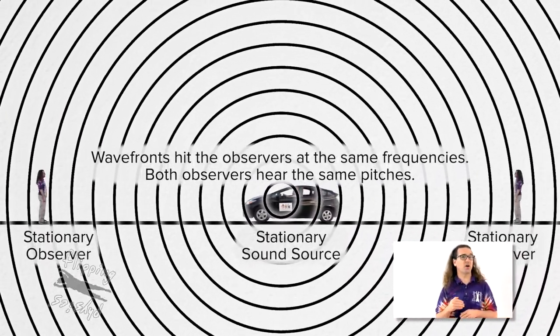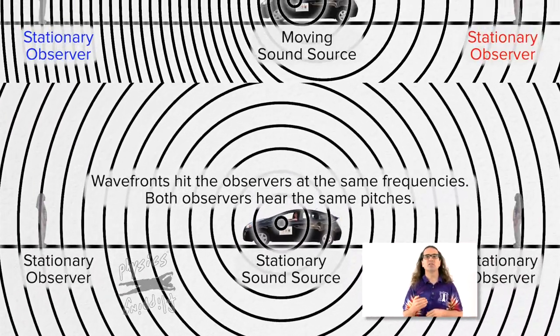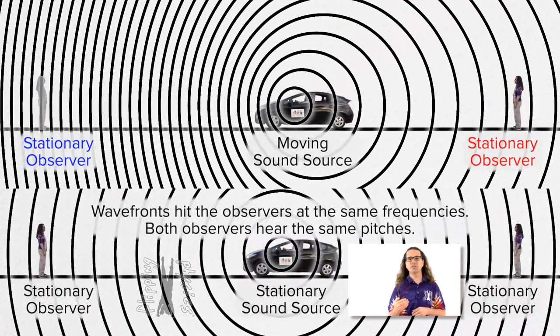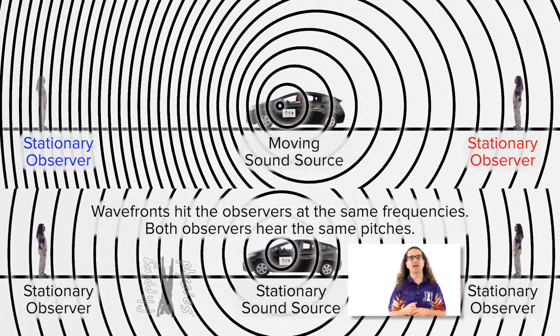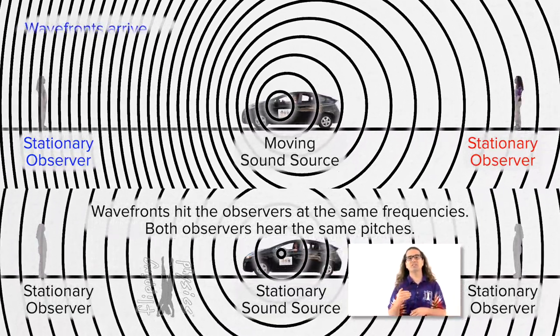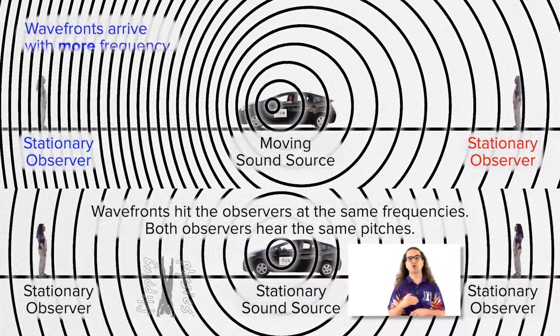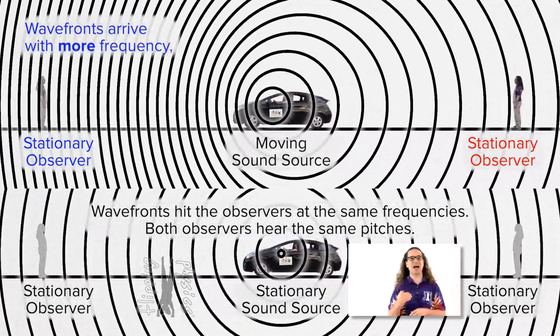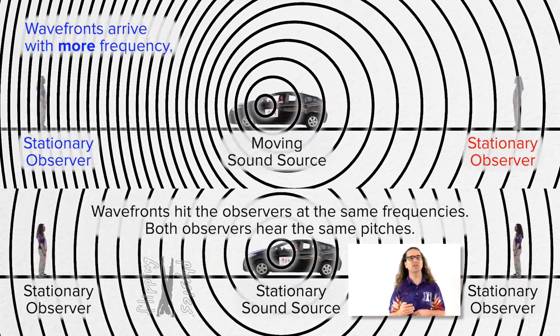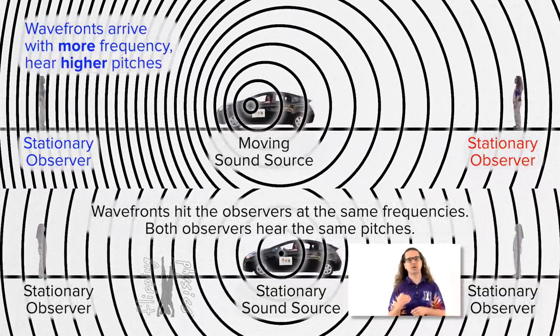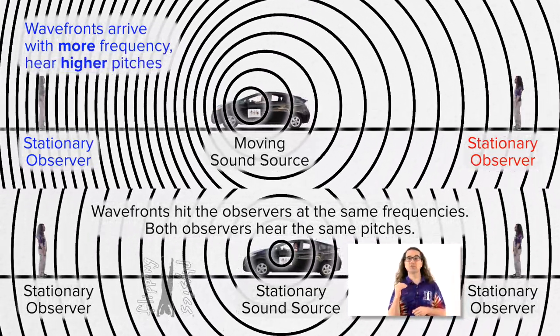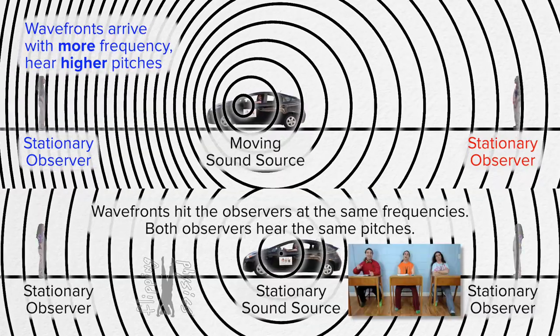If instead the car is moving, the wavefronts in front of the car are closer together and the wavefronts hit the stationary observer more often, or at higher frequencies, which is why the observer hears higher pitches when the car is moving toward them.